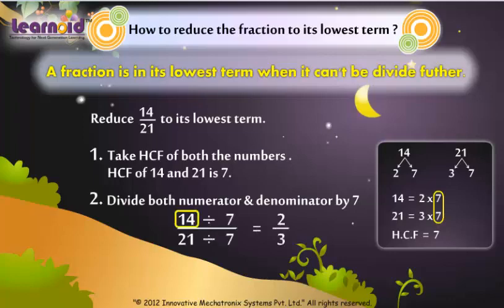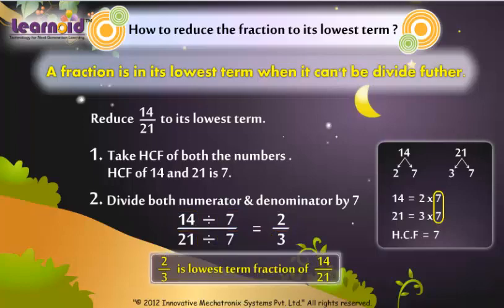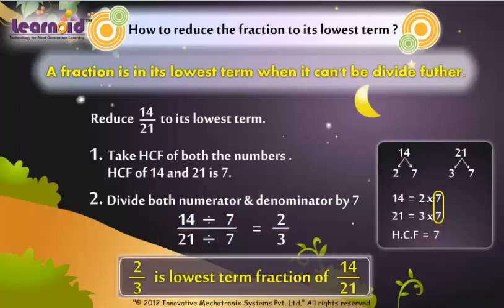14 divided by 7 is 2. 21 divided by 7 is 3. So 2 by 3 is the lowest term of the fraction 14 by 21.